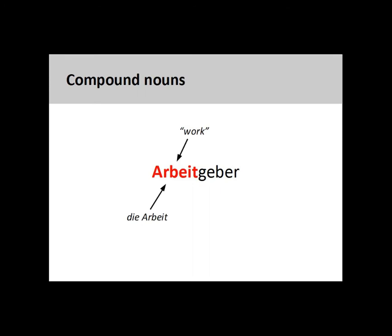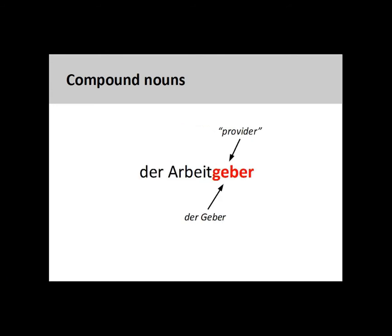The first noun in our compound noun is die Arbeit, a feminine noun meaning work. The second noun is der Geber, a masculine noun meaning giver or provider. This noun is derived from the verb geben, to give. You will recall from the presentation on masculine nouns that all nouns ending in -er that are derived from a verb are masculine.